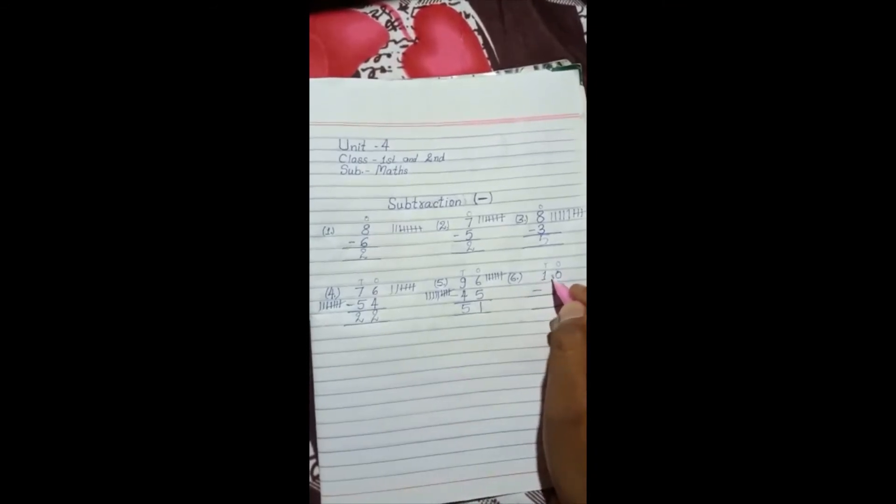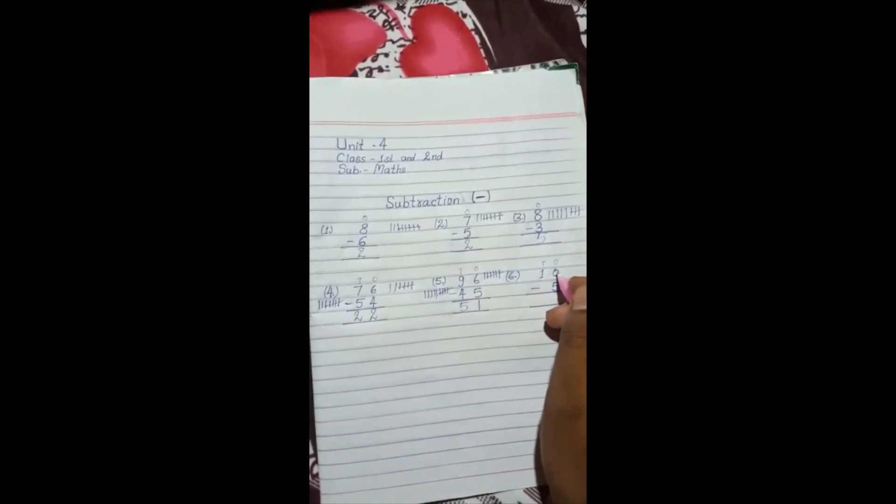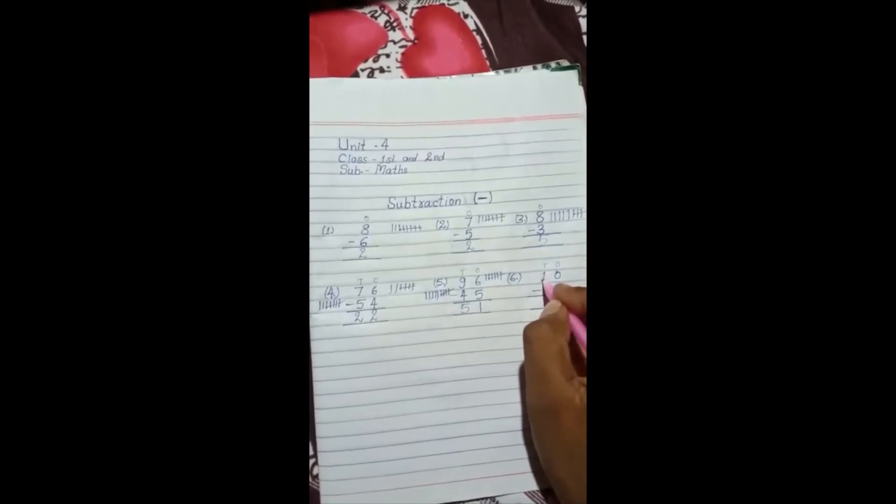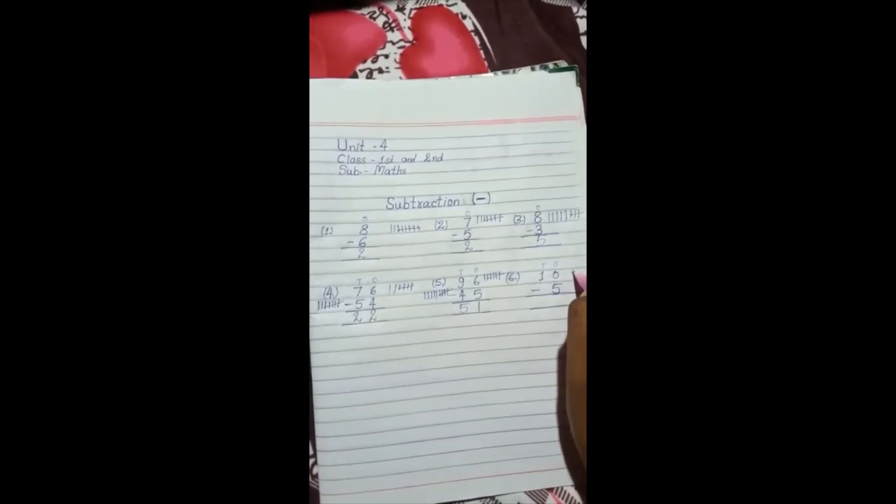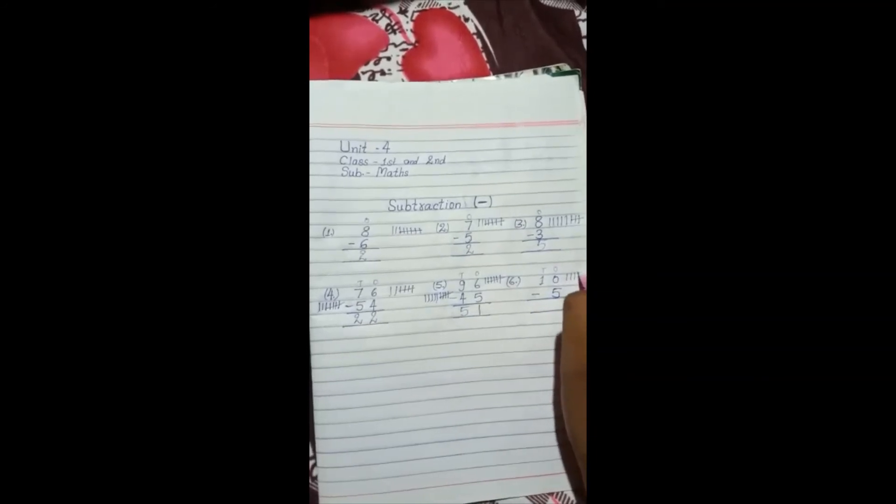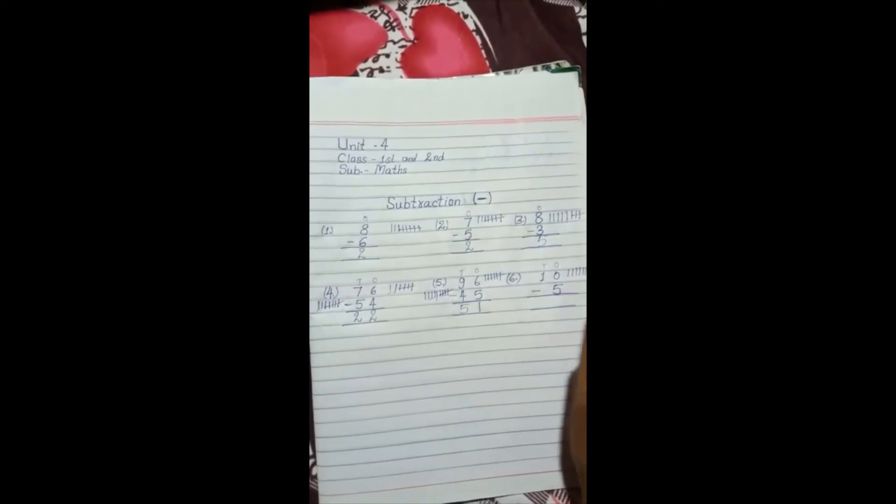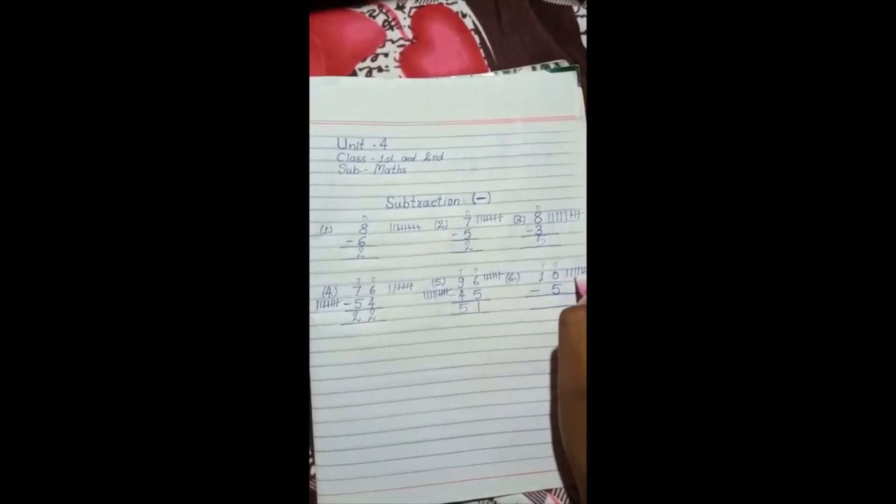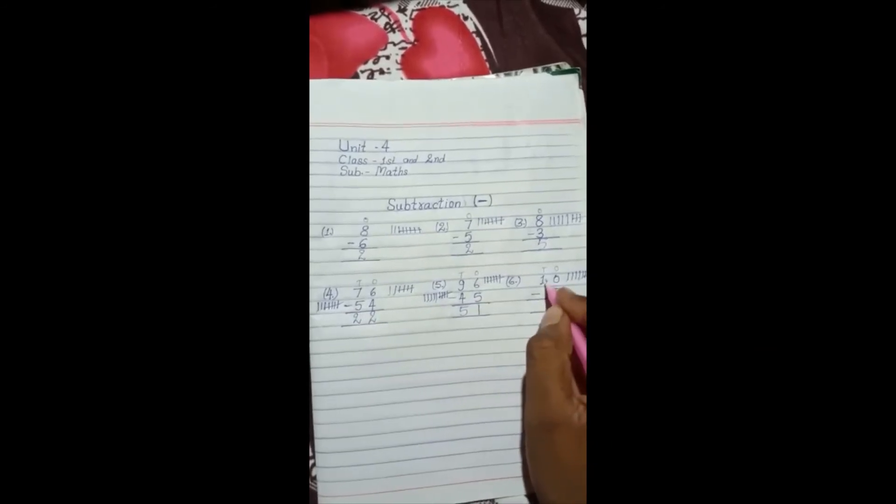Next example: 10 minus 5. 10 ones place is 0, tens place is 1, both make 10. 10 minus 5. So for 10, draw 10 lines: 1, 2, 3, 4, 5, 6, 7, 8, 9, 10. Subtract 5. Cross 1, 2, 3, 4, 5. How many remain? 1, 2, 3, 4, 5. Here we write 5. 10 minus 5 is equal to 5.